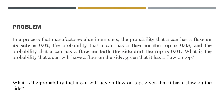In a process that manufactures aluminum cans, the probability that a can has a flaw on its side is 0.02, the probability that a can has a flaw on the top is 0.03, and the probability that a can has a flaw on both the side and the top is 0.01. What is the probability that a can will have a flaw on the side given that it has a flaw on top?